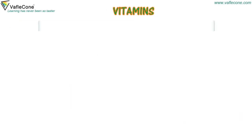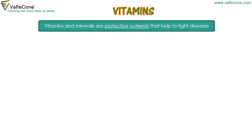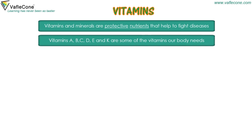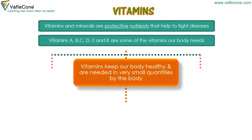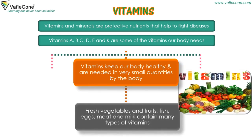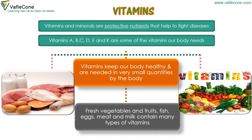Vitamins and minerals are protective nutrients that help to fight diseases. Vitamins A, B, C, D, E, and K are some of the vitamins our body needs. Vitamins keep our body healthy and are needed in very small quantities. Fresh vegetables and fruits, fish, eggs, meat, and milk contain many types of vitamins.